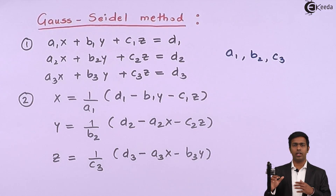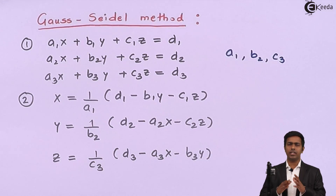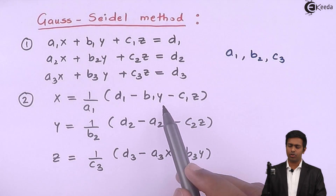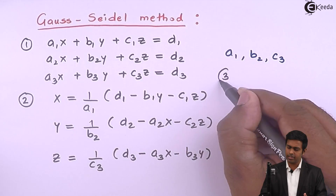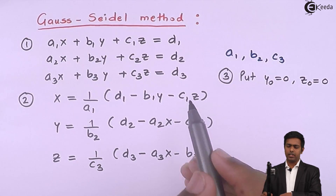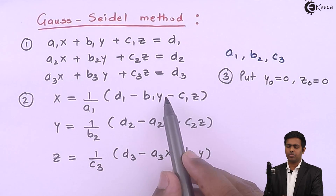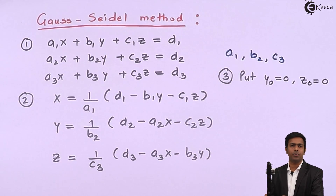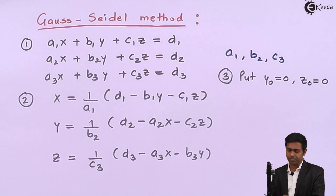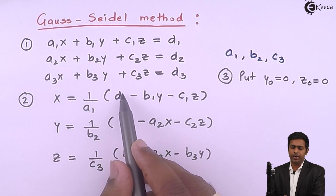To reach the desired accuracy we start with certain initial assumptions. We assume the initial roots are zero, so y0 = 0 and z0 = 0. By substituting these as zero, we get x1 = d1/a1. The initial roots are called iteration 0; the next set is x1, y1, z1, then x2, y2, z2, x3, y3, z3, and so on. When y0 and z0 are zero, we get x1 — the next iteration value — as d1/a1.